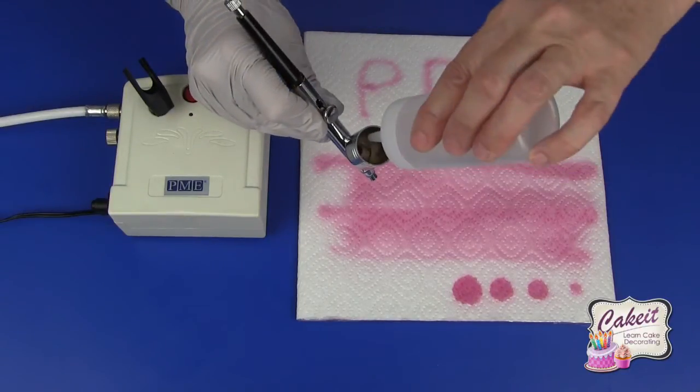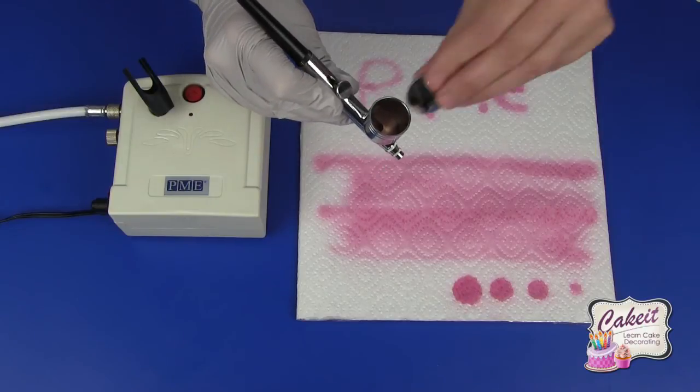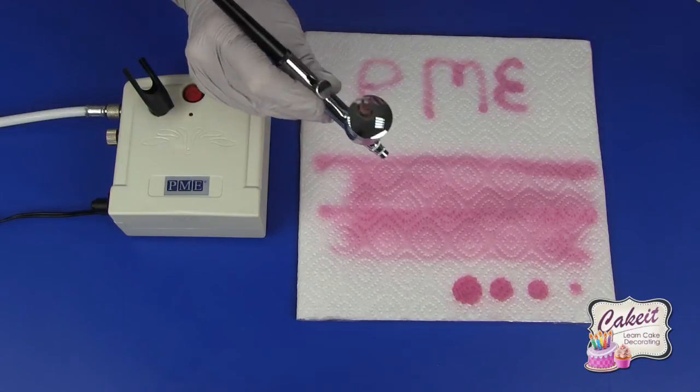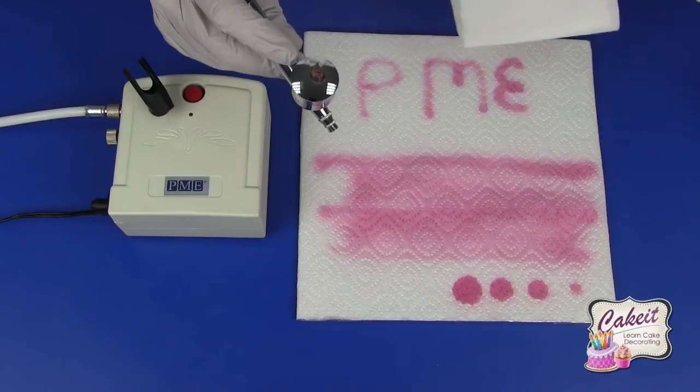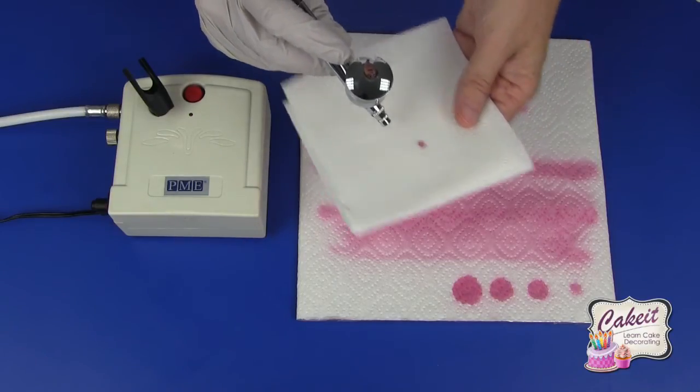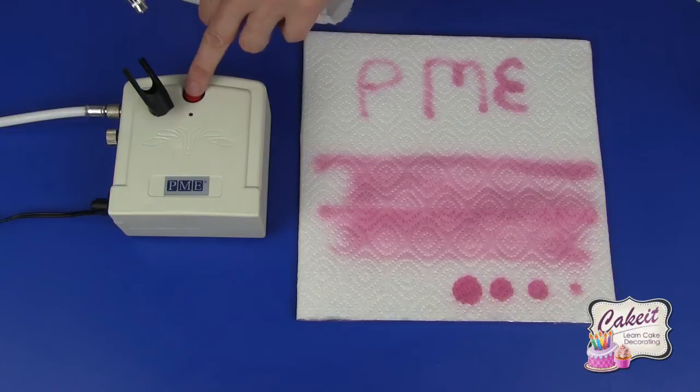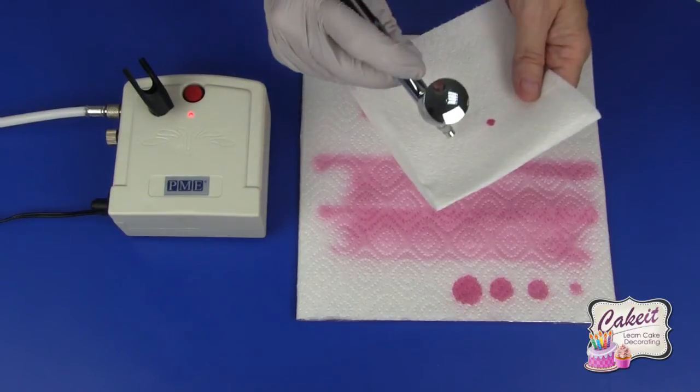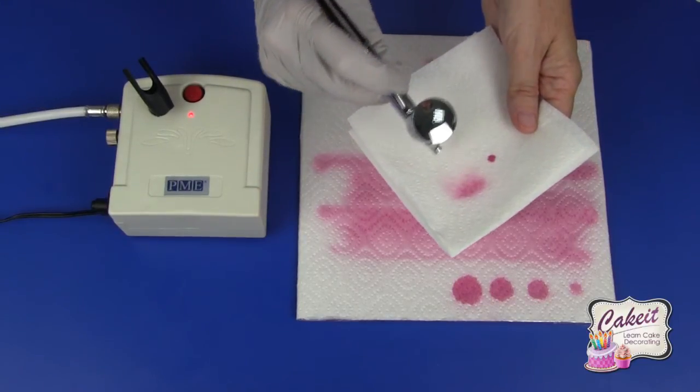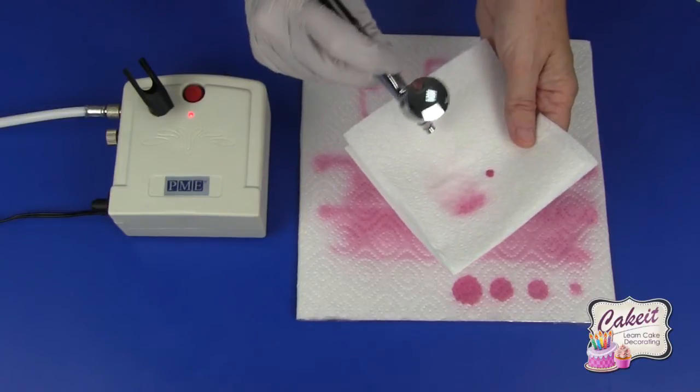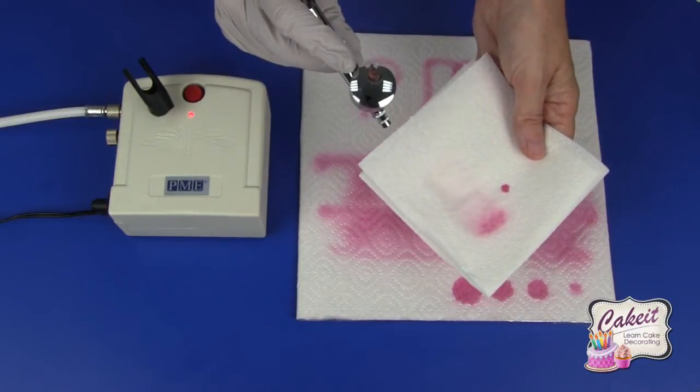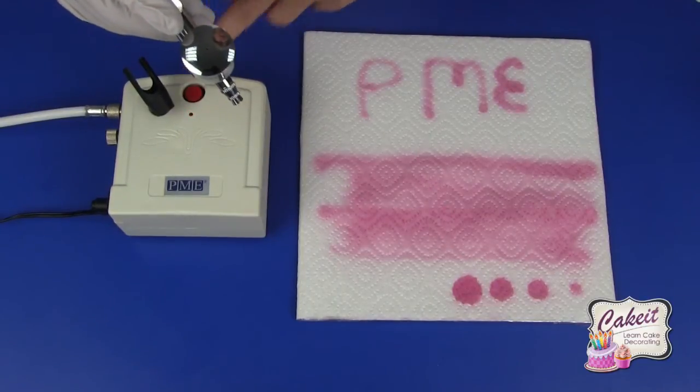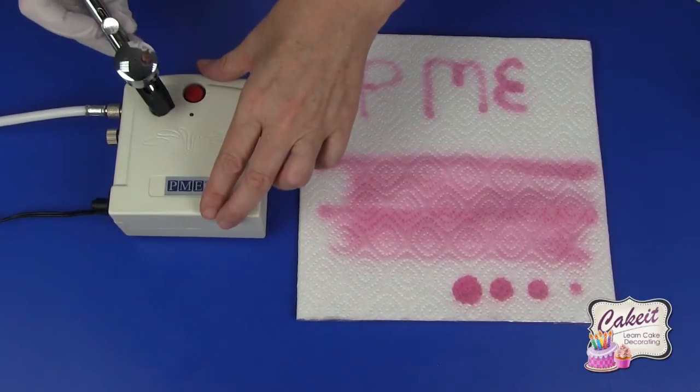Add in some lukewarm water, not too much. Add the lid back on, and now into some paper towel, switch the airbrush on until you get clear liquid coming through. You can see that's clear now, so this means that it's clean. Just replace that back into the holder.